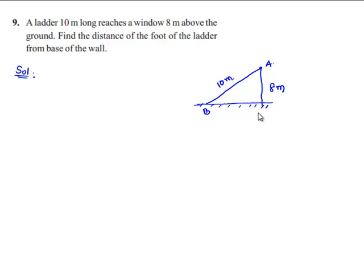Here the contact of the wall with the ground is point C. The foot of the ladder from the base of the wall is BC. Let us assume this distance as a.